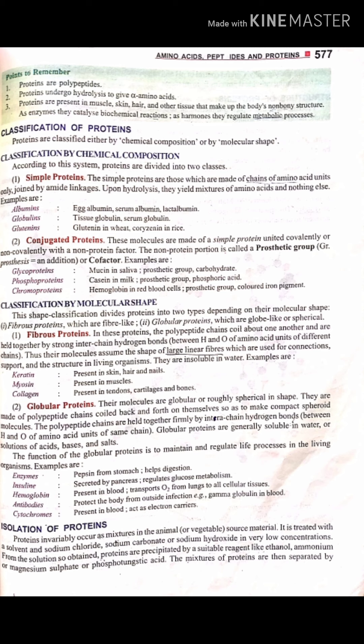We can also classify proteins by molecular shape, dividing them into two parts. The first is fibrous protein. Fibrous protein has a linear, fiber-like shape and is connected to the structural framework of organisms. The fibrous protein polypeptide chains are held together by strong interhydrogen bonds.